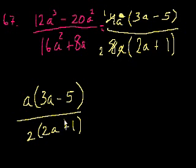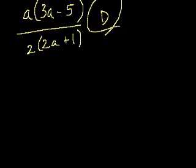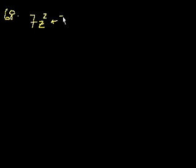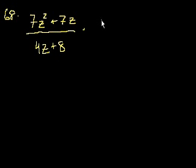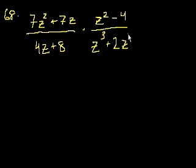And that is choice D. Problem 68 — this is a good one. They want us to multiply 7z squared plus 7z over 4z plus 8, times z squared minus 4 over z cubed plus 2z squared plus z. You might think you have to multiply all of these out, but the best approach is to factor everything and see what cancels. It'll turn into a pretty simple problem.